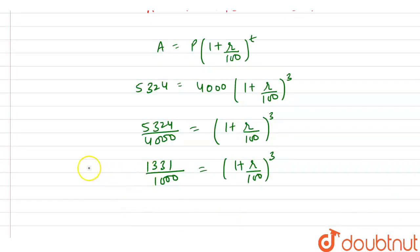Here we can also write this as 11 by 10 whole cube. So if we compare this one with this then we can say that we are having 11 by 10 equals 1 plus R by 100.